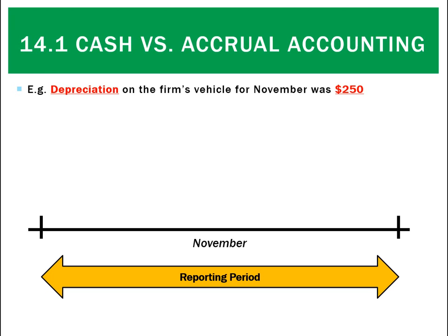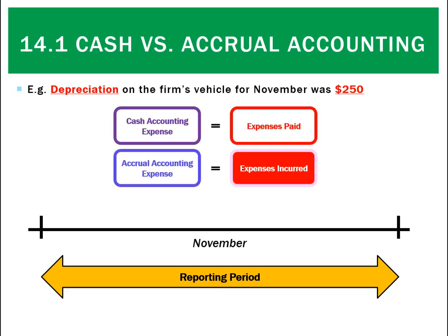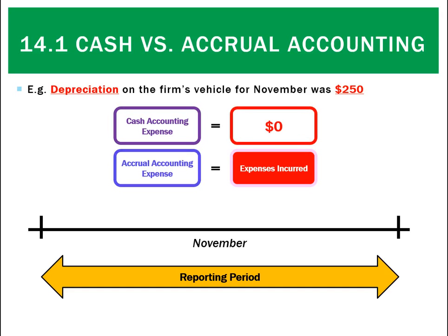Another possible difference between the two is when we have depreciation. For example, we depreciated a vehicle for $250 during November. Calculating our profit for November under cash accounting, the expense paid is zero. Under accrual accounting we've got an expense incurred of $250. The most accurate figure is the accrual accounting one because it's recognizing the expense that's been incurred — we've used the vehicle so we should recognize an expense. Under cash accounting, because nothing was paid, there's no expense, and that can be misleading.